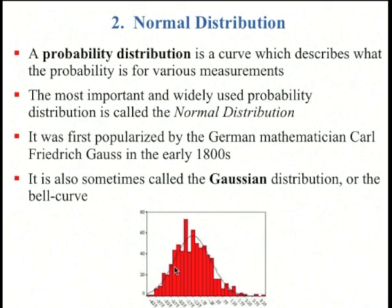Here's an example of a whole bunch of measurements, a histogram, and this curve, or Gaussian, is meant to be a fit to this histogram.